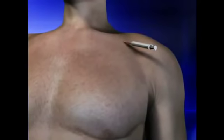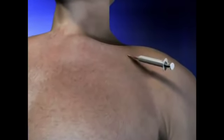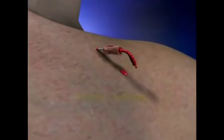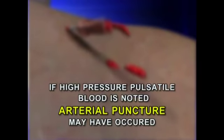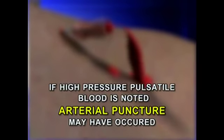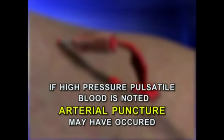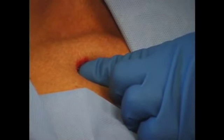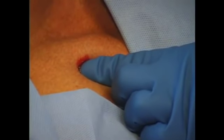After accessing the vein, the syringe is removed and the backflow of blood is observed. If high-pressure pulsatile blood is noted, arterial puncture may have occurred. In this case, the needle is withdrawn and pressure is held for one to two minutes before the next attempt.